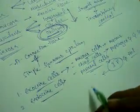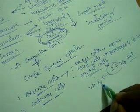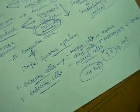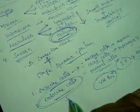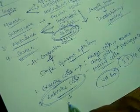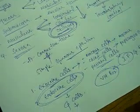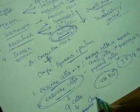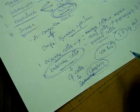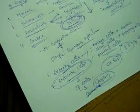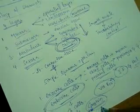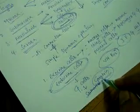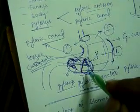The intrinsic factor is useful for the absorption of vitamin B12, and hydrochloric acid is used for the digestion of food. If we come to the endocrine cells, these cells release hormones — among these, G cells are present. These G cells release the hormone called as gastrin. Gastrin is a hormone released by the G cells of the endocrine cells of the stomach, and it is especially released in the pyloric antrum region.